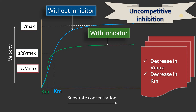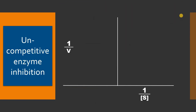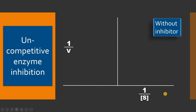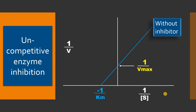Let me explain this mechanism of uncompetitive inhibition with the help of the Lineweaver-Burk plot, or double reciprocal plot. Here we have plotted the reciprocal of velocity on the y-axis and the reciprocal of substrate concentration on the x-axis. Normally, without inhibitor, the line intercepts the y-axis at 1/Vmax and touches the x-axis at -1/Km.